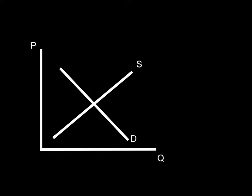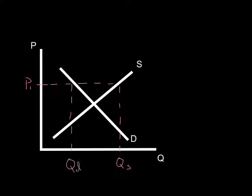On the other hand, let's take a look at what will happen if the price happens to be up high — say the price starts up here at some number P1. If the price is here, we come across with our horizontal price line until we hit the supply curve and come down — that's the quantity supplied. We follow that price line until we hit the demand curve and come down — that's the quantity demanded. At this price P1, the quantity supplied will be much greater than the quantity demanded.